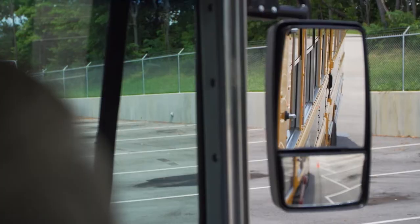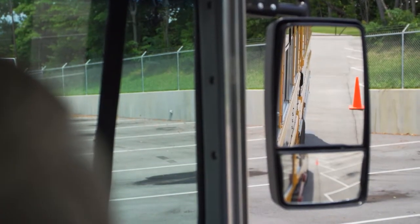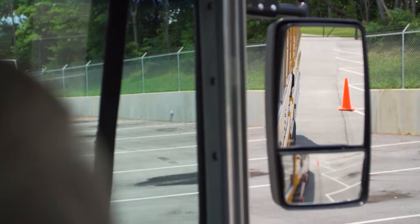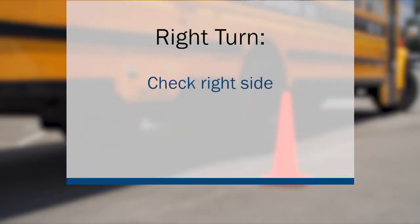Typically, when you make a right turn, it's at an intersection or in a parking lot. Since there are a significant number of accidents which happen while a driver is making a right turn, it is important once again to ensure your mirrors are properly adjusted to see any objects, people, or vehicles on the right side of the bus. Check to the right side of the school bus for any obstacles, vehicles, or pedestrians. This will help you in clearing the turn during the maneuver.